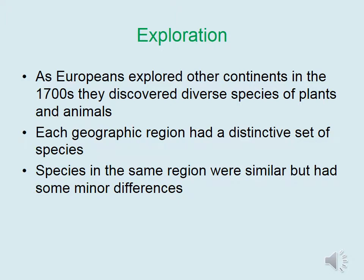As Europeans explored other continents in the 1700s, they discovered diverse species of plants and animals — many more species than perhaps creationism accounts for. Each geographic region has a distinctive set of species, which seems to indicate that where a species lives leads to the characteristics they have. Species within the same region had similar but also some minor differences in their traits, once again showing the influence of the environment on traits and the idea that a limited number of species began in an area but changed slightly over time.